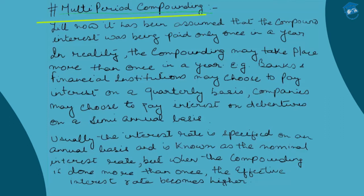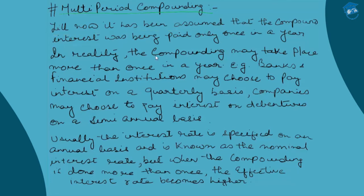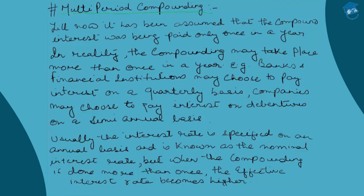It has been assumed so far that compound interest was paid only once in a year. In reality, compounding may take place more than once. For example, banks and financial institutions may choose to pay interest on a quarterly basis — four times in a year, or at the end of each quarter. Since there are twelve months and one quarter is three months, compounding quarterly means four times in a year. Semi-annually means twice in a year.